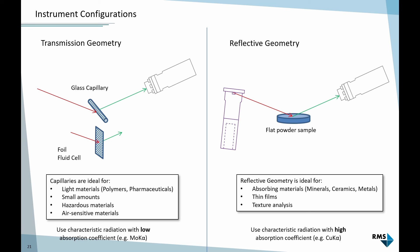For transmission geometry, we typically choose short-wavelength radiation — harder radiation like molybdenum Kα, which is about half the wavelength of copper, cobalt, or chromium radiation — because it is absorbed much less by the sample, giving us better intensity at the detector.